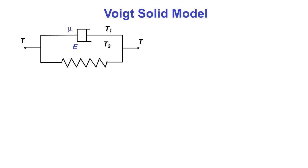Next, the Voigt solid model has the spring in parallel with the dashpot, which prevents the dashpot from extending indefinitely. Unlike the Maxwell model, this represents solid-type behavior with viscous properties rather than fluid-like behavior with elastic properties.